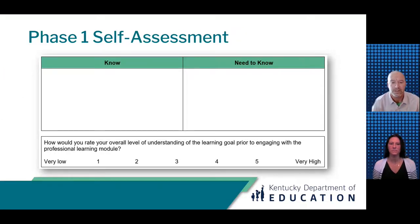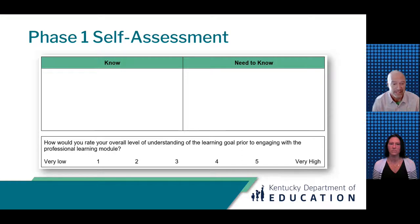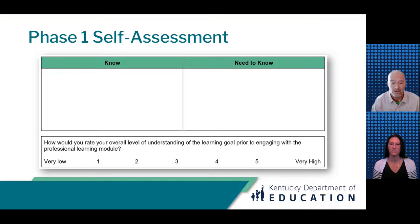We will use a know/need-to-know approach for activating background knowledge. First, note things you may already know about our learning goal, perhaps using the title and steps of Phase 1 for added insight. As we are beginning, this can certainly include hunches you may have as well. Next, infer things it may be important for you to find out based on the learning goal — things you may need to know. Both what you may know and what you may need to know can be recorded in the table on page 1 of your participant handout.